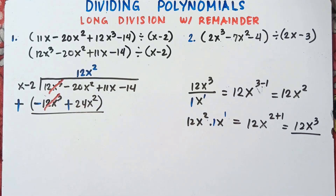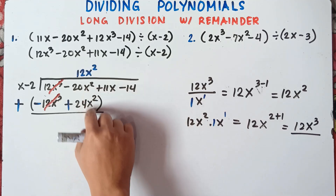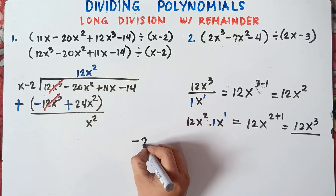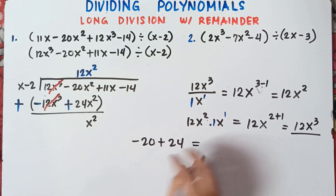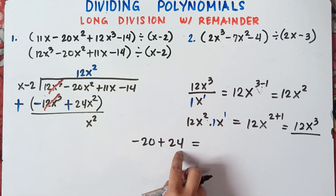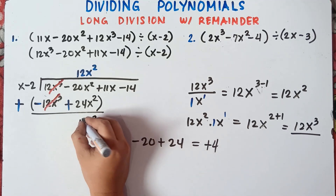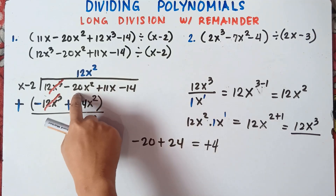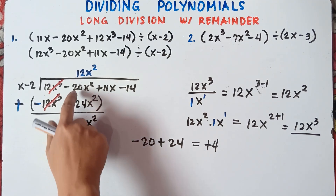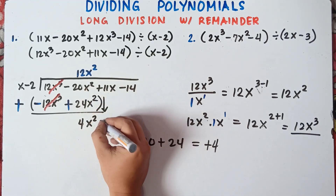Now copy x squared. Negative 20 plus 24 — if the signs are not the same, subtract: 24 minus 20 is 4. Since 24 is greater than 20, we have positive 4. So we have 4x squared. Then we bring down positive 11x.